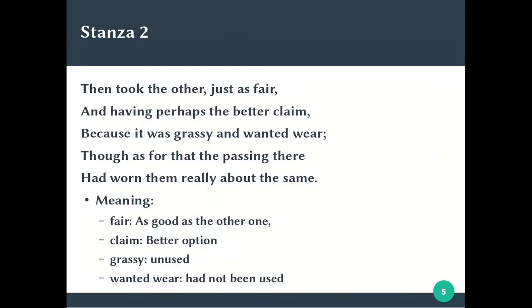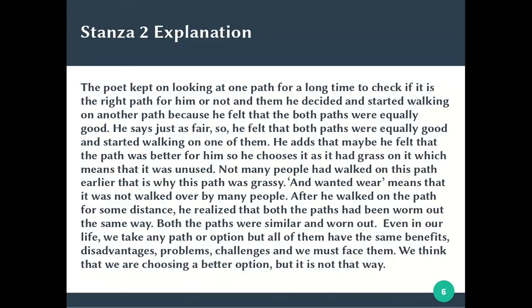In the second stanza, the poet wants to say that the speaker selects the road that appears at first glance to be less worn and therefore less traveled. There are two roads — one traveled by many people and one traveled by fewer people. He decides whether to go on the road chosen by all people or the one chosen by fewer people, and he decides to go on the road taken by fewer people.